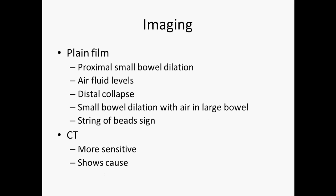On plain film you look for proximal bowel dilation and air-fluid levels. In a true bowel obstruction you will often see a distal collapse — if it's completely obstructed, anything past the obstruction will be empty and collapsed. Small bowel dilation with air in the large bowel is something to look for, as is the string-of-beads sign associated with that distal collapse.